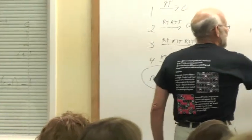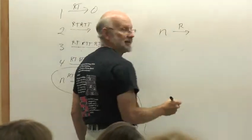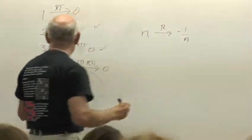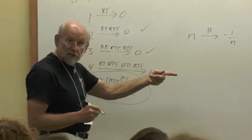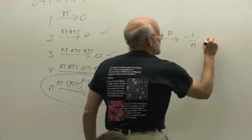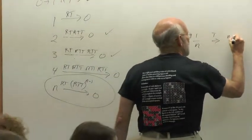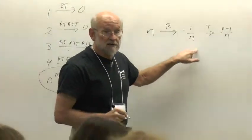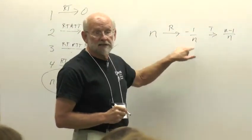So if we started with N, what does R do to it? Negative 1 over N, and then what does the T do to that? Adds 1, so T gives us N minus 1 over N, right? It adds N over N, so we'll have N minus 1 divided by N.